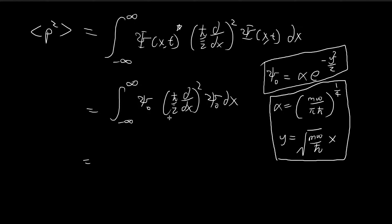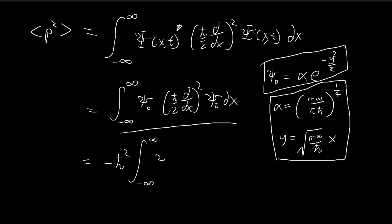We can further simplify this term slightly by pulling these constants out, so this just becomes negative h-bar squared. We're then left with the task of integrating psi naught times the second derivative of psi naught dx.